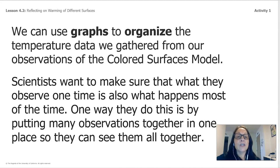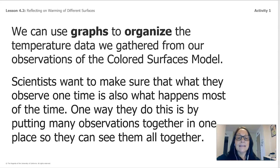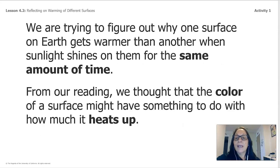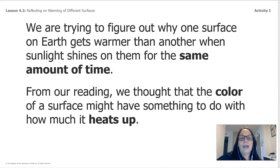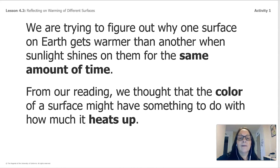Scientists want to make sure that what they observe one time is also what happens most of the time. One way they do this is by putting many observations together in one place so they can see them all together. We're trying to figure out why one surface on earth gets warmer than another when sunlight shines on them for the same amount of time. From our reading, we thought that the color of a surface might have something to do with how much it heats up.